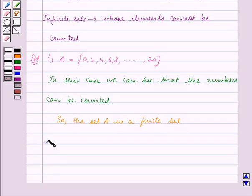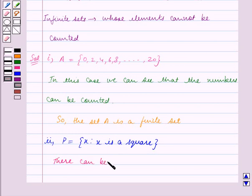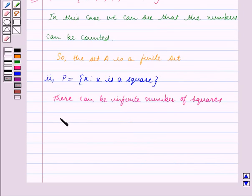The second part is P equals x such that x is a square. There can be infinite number of squares like the squares of side 2cm, 3cm, 4cm and so on till infinity. So, we can say that the set P is an infinite set.